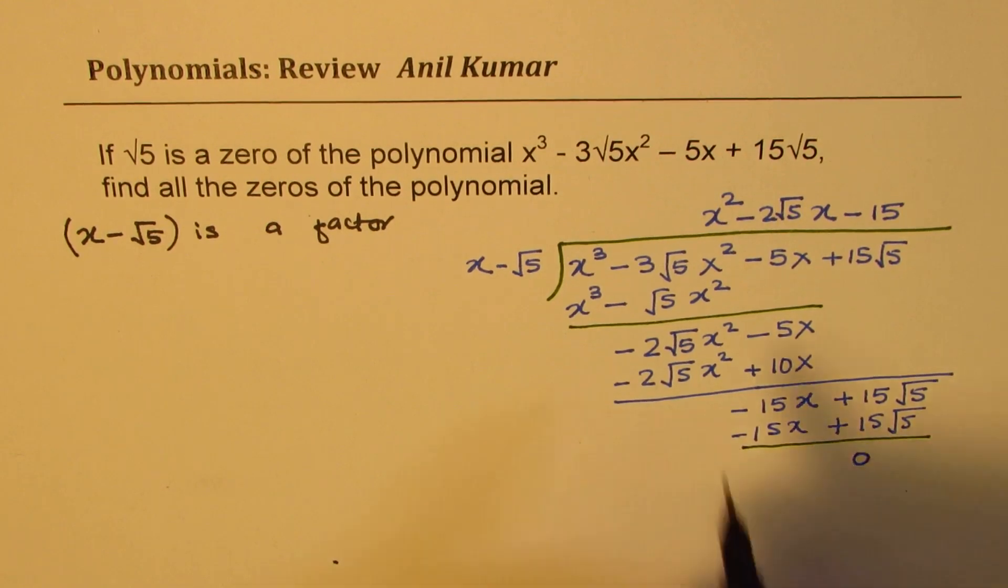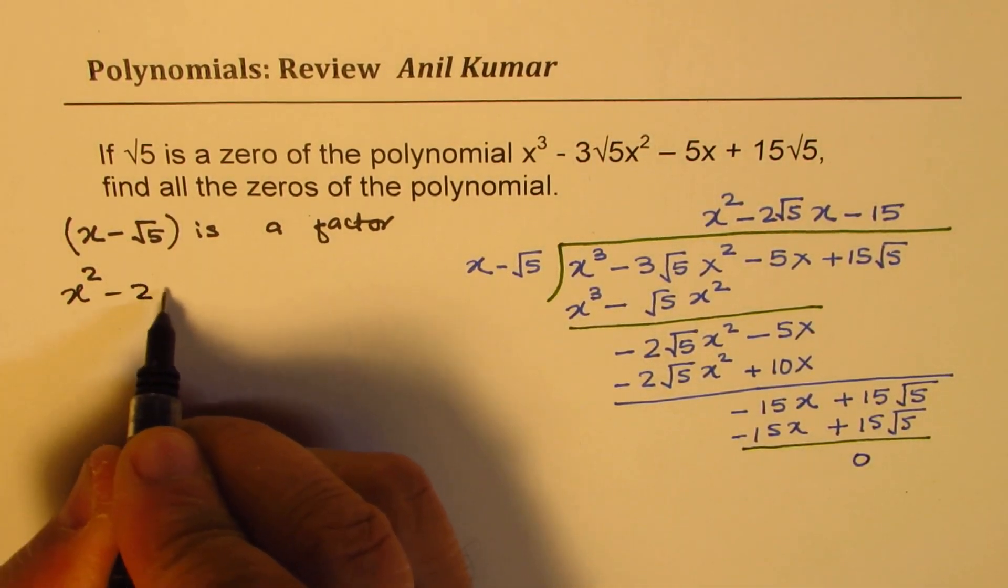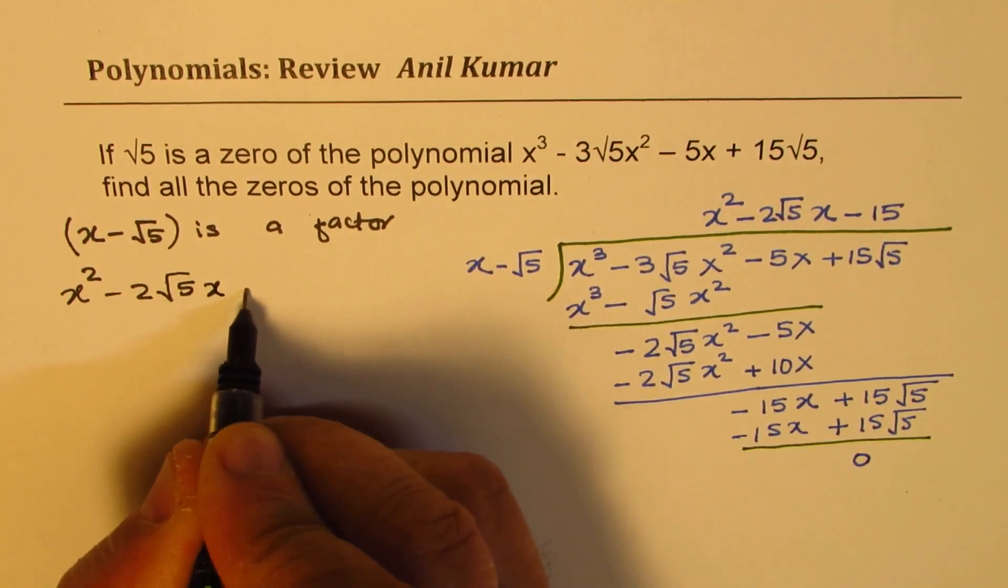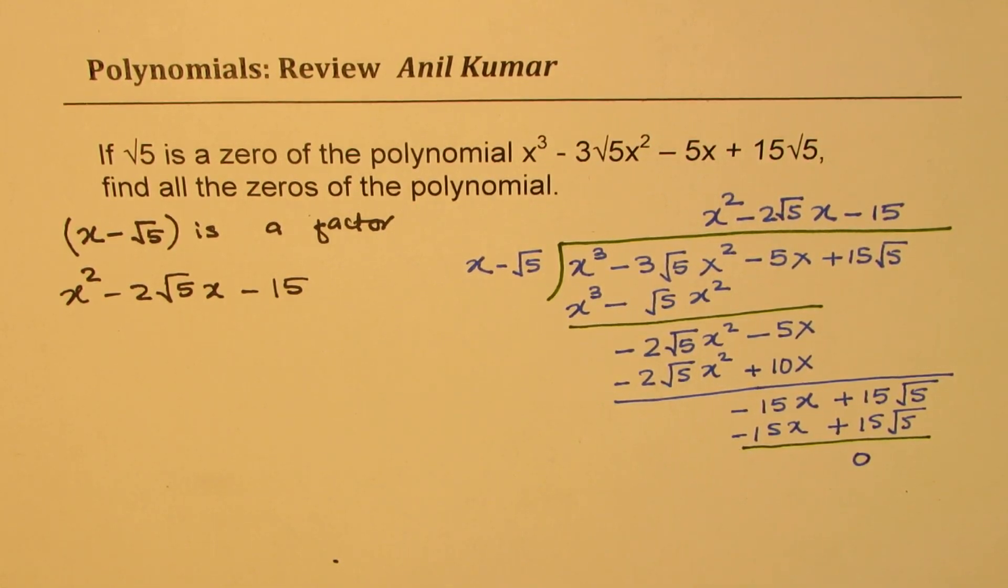So you have the other factor with you. The other factor is x squared minus 2 square root 5 x minus 15. You could factor this using product and sum, but that could be difficult for some students.